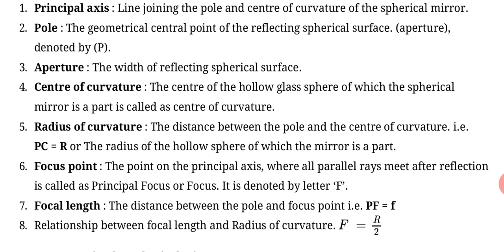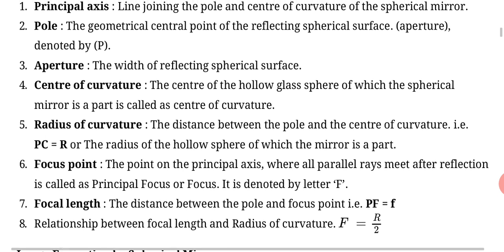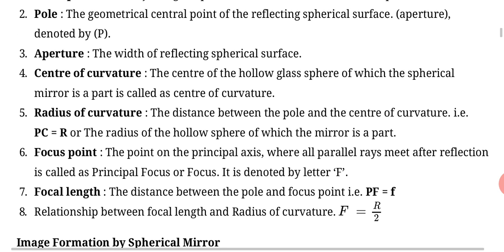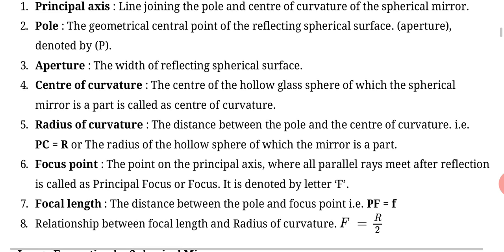Point six, focus point: the point on the principal axis where all parallel rays meet after reflection is called principal focus or focus. It is denoted by letter capital F. It means on principal axis, the point where rays meet after reflecting from surface is called focus.